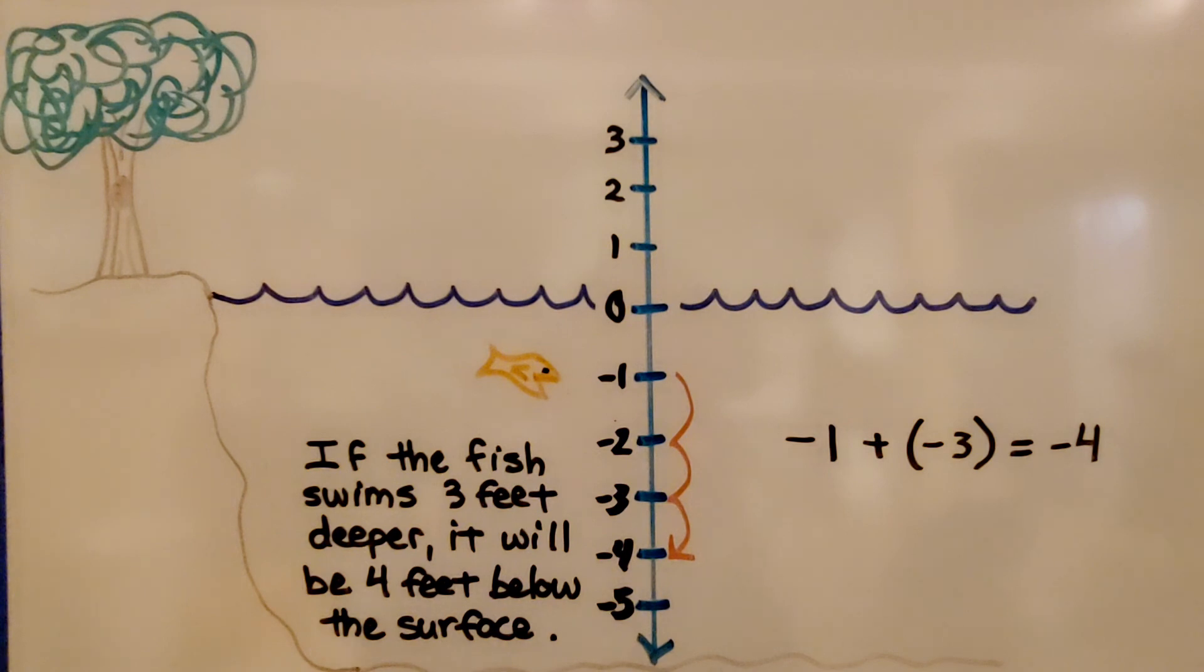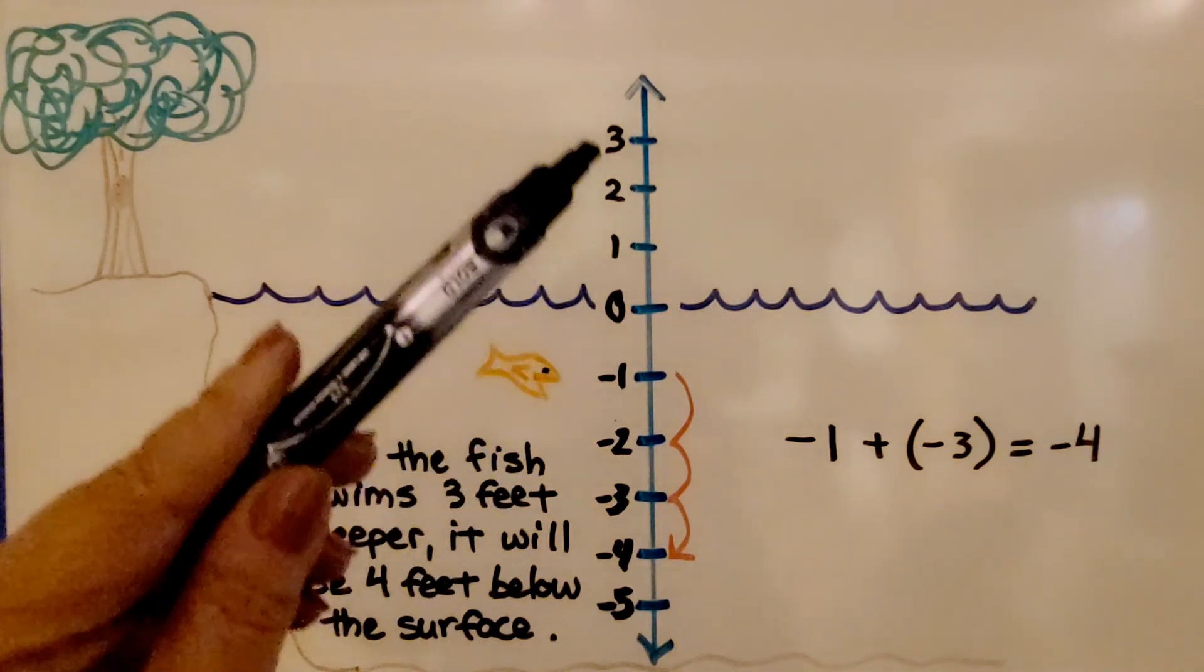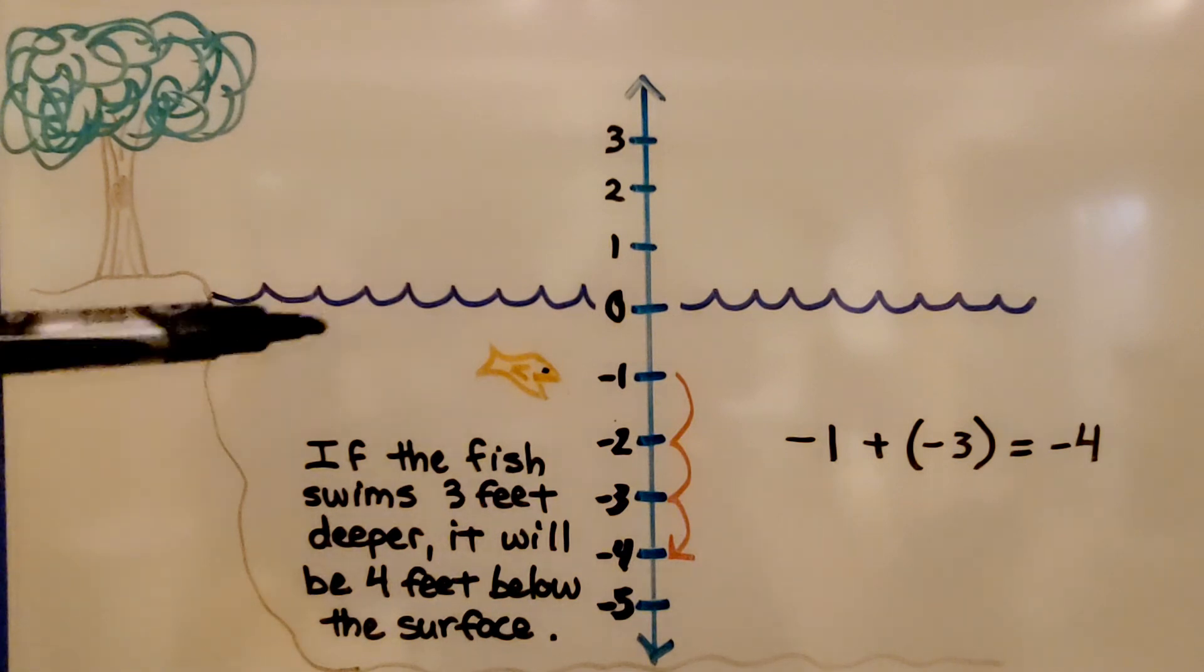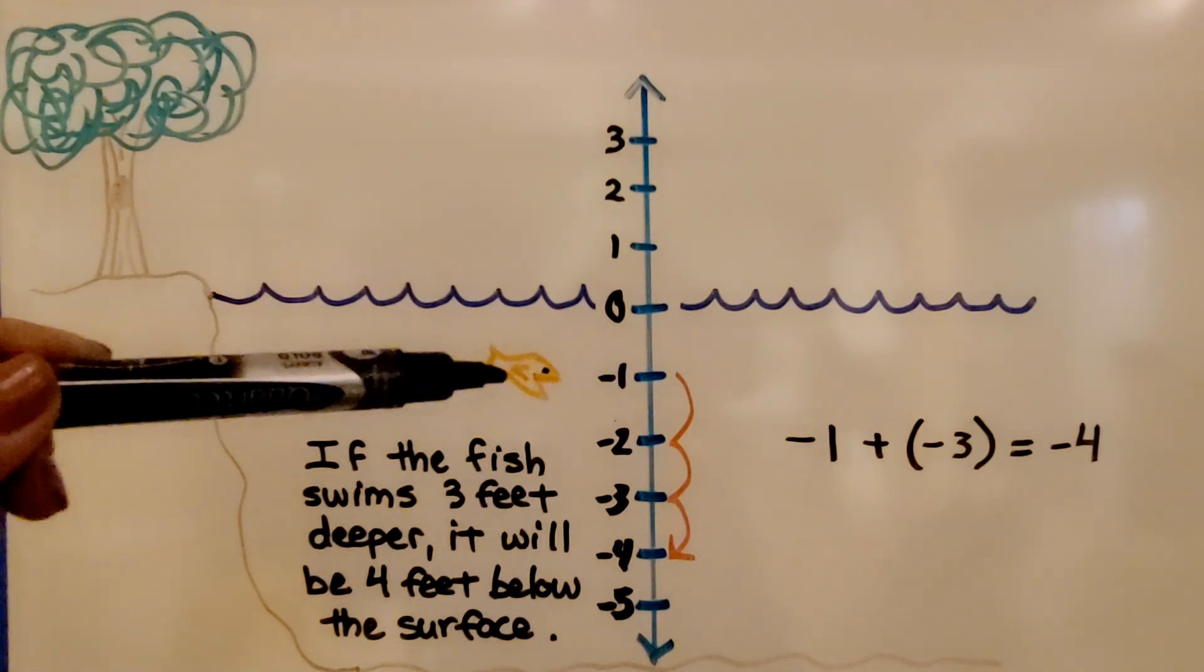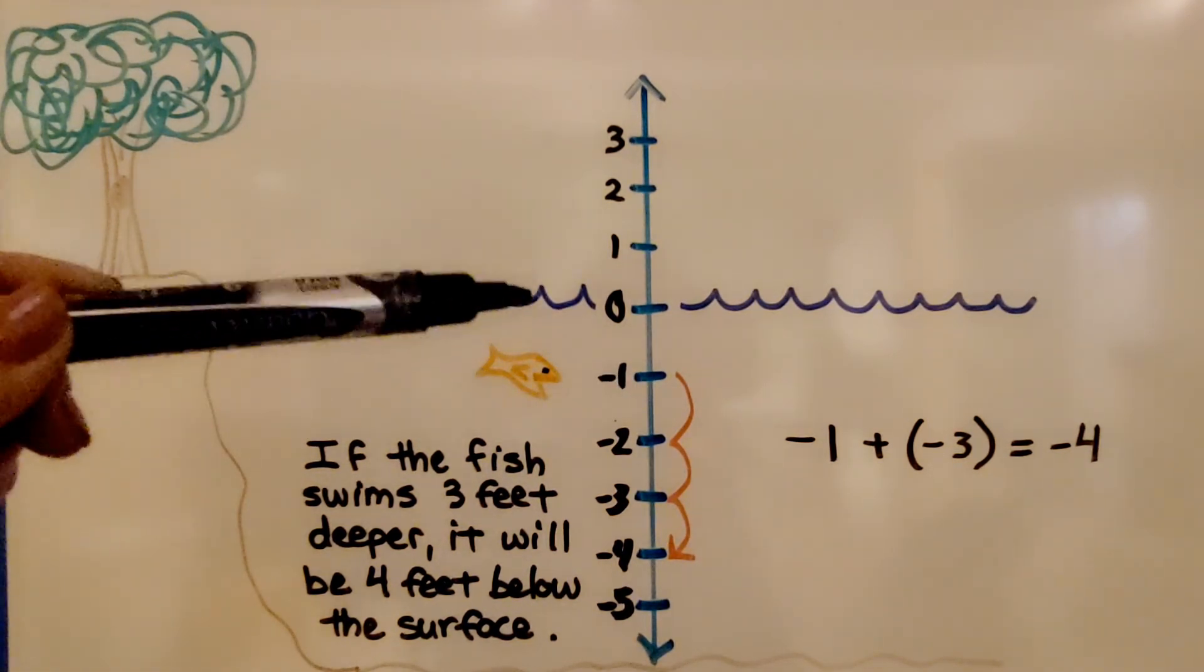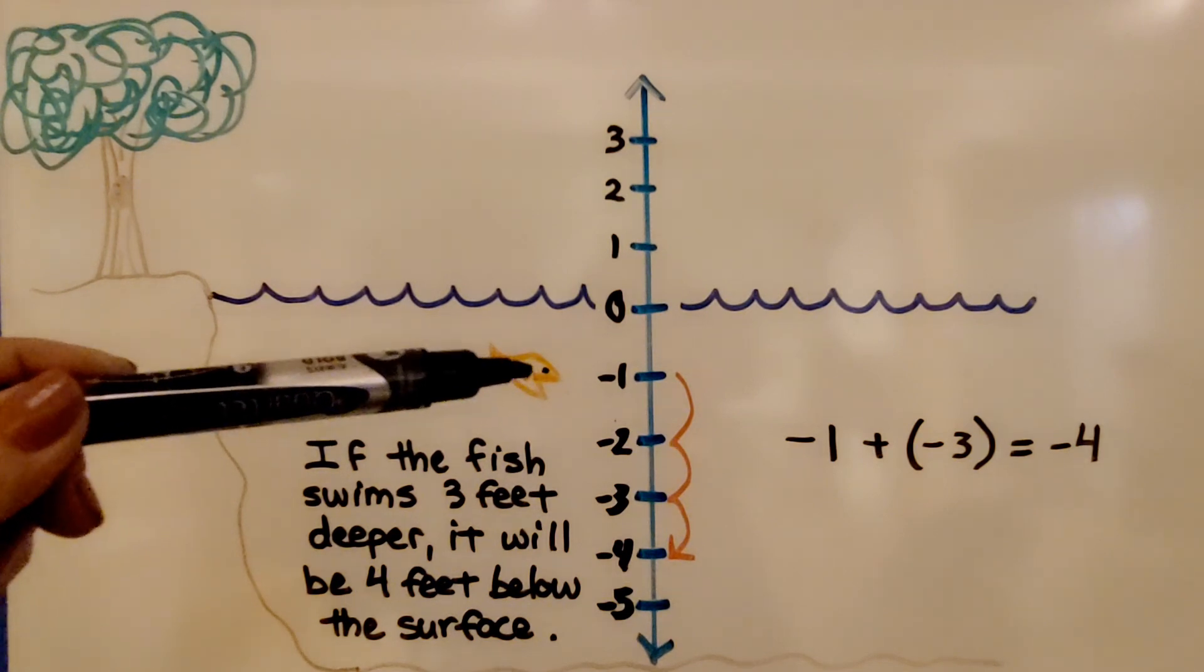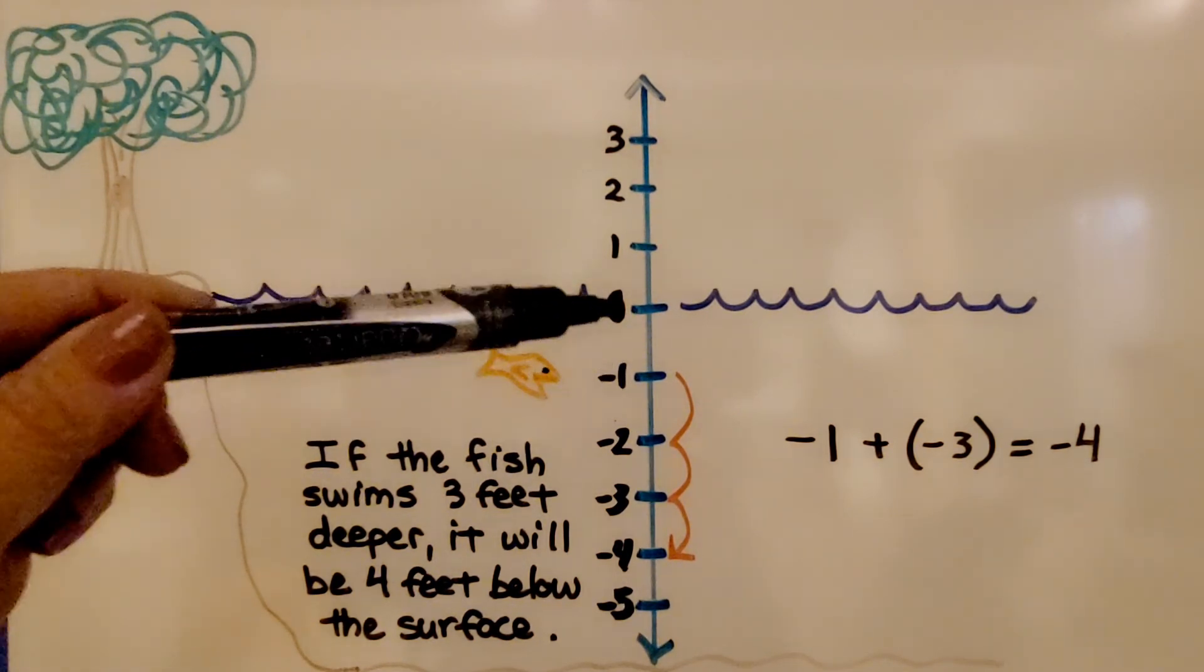So here we have an addition equation. We have negative one plus negative three, and it's equal to negative four. We're using a vertical number line. So this fish is at negative one for depth. It's negative one below the water. It's negative one below zero.